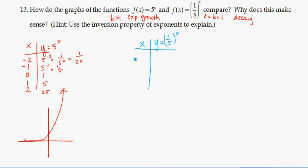Here's really where we need the inversion property. So if I look at 1/5 to the negative 2 power, I can think of that as using the inversion property, that's 5 over 1 to the positive second power.